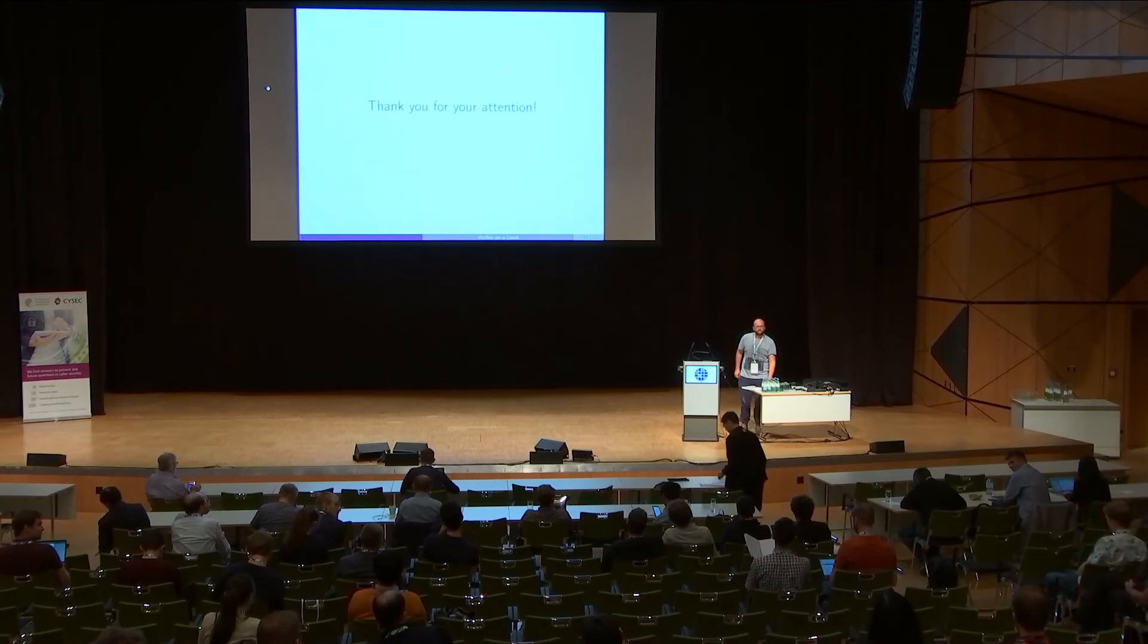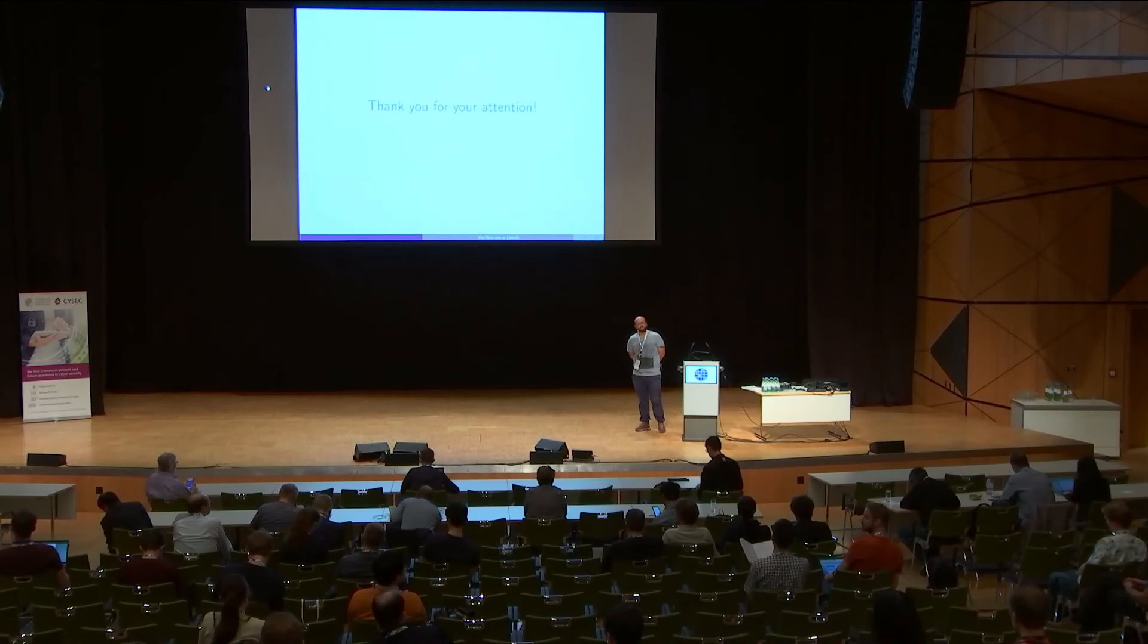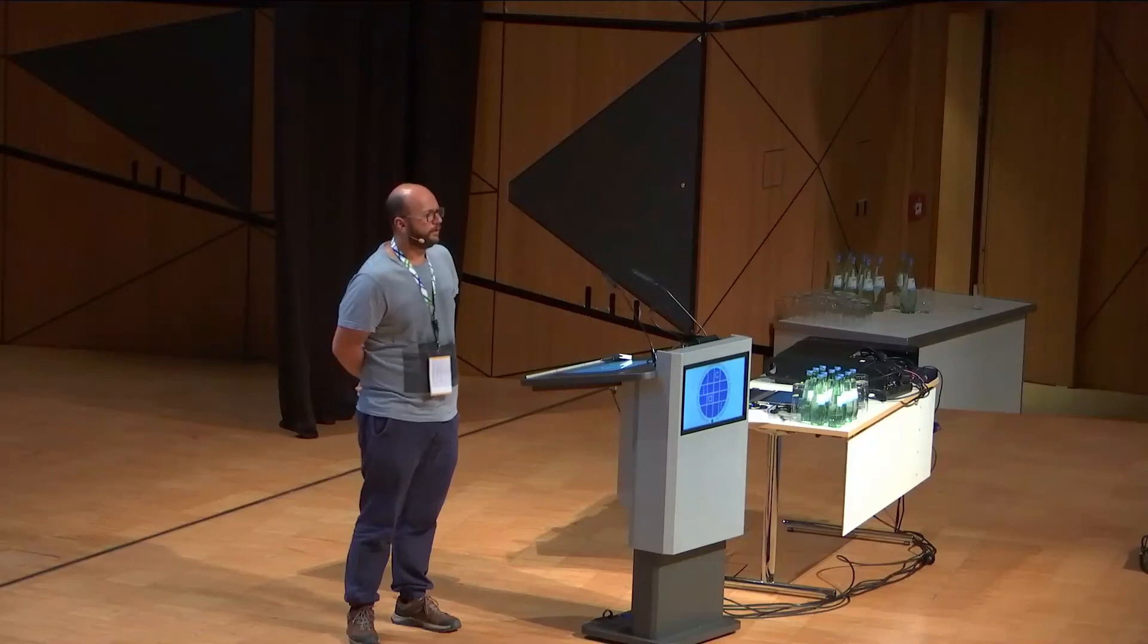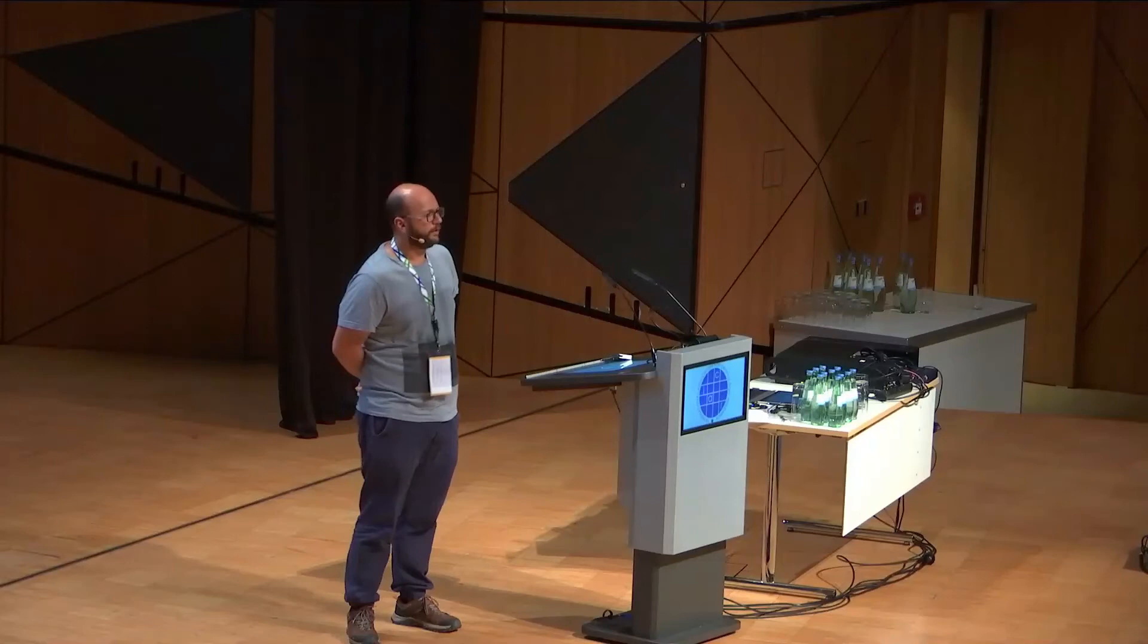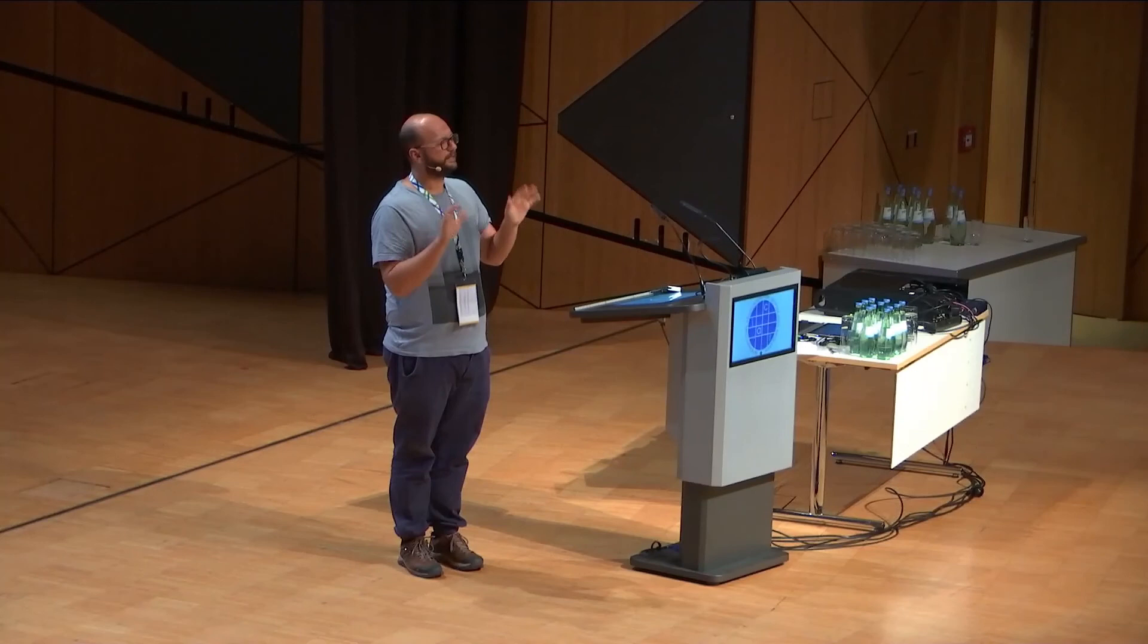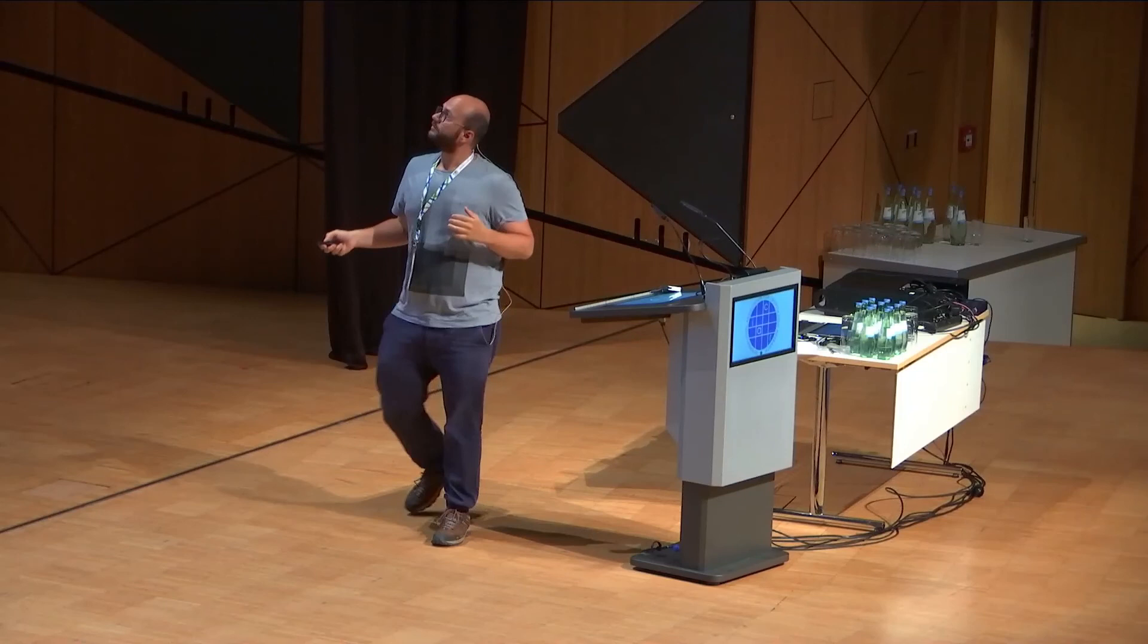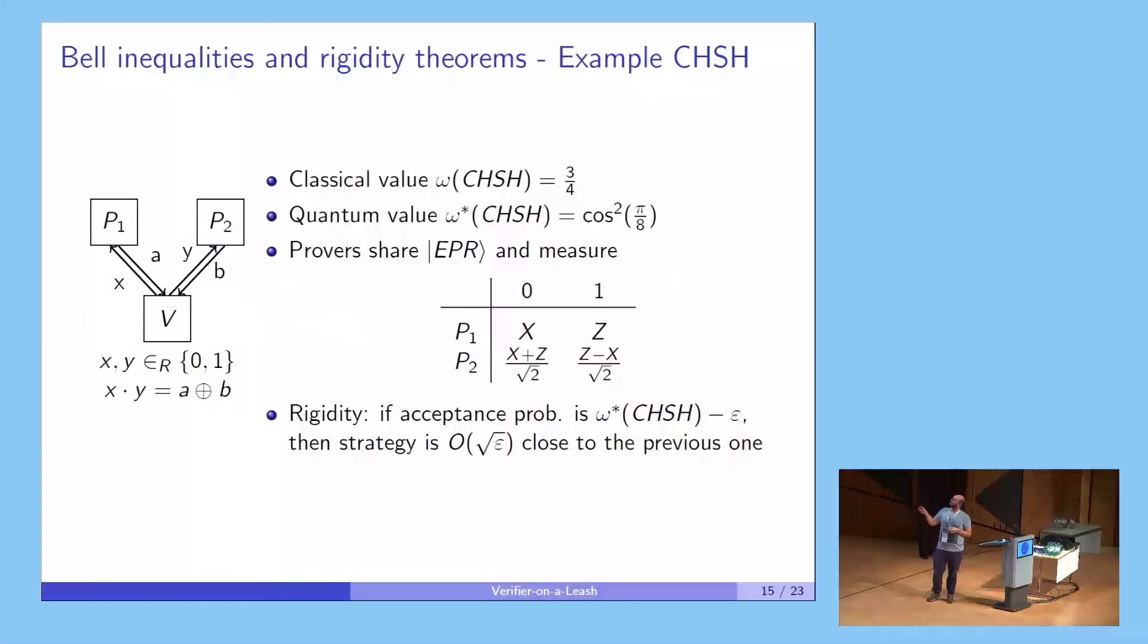Question: In this test that you have as a basic construct, when you send X and Y and then you receive A and B, are they somehow related to the actual computation that you want to compute, or are they just random tests? Answer: They are totally unrelated. It's just to test the strategy. It's not related to the computation, but the honest strategy - we are interested in this X and Z. In an obfuscated way, it is what is the basis of the measurement that the provers are doing. Somehow if they pass this game that's independent of the computation, we have some guarantees on the measurements that they're doing.